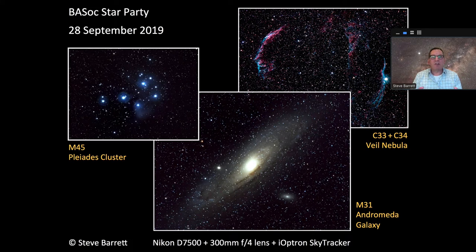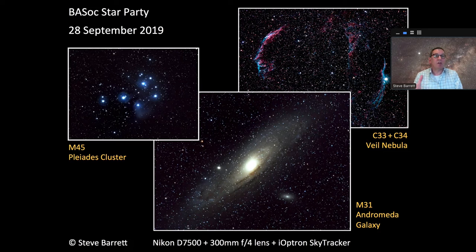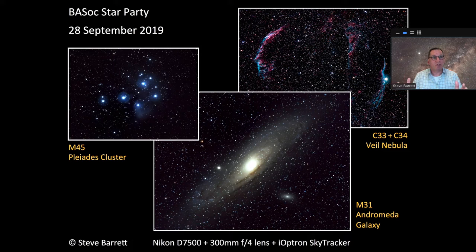This is a reminder that a camera on a tracker can produce some very nice images. Essentially the cost involved is whatever you've got in terms of a camera and lenses and £20 for a star tracker. So if that's your budget, £20, you can generate images like this with the camera you've already got.